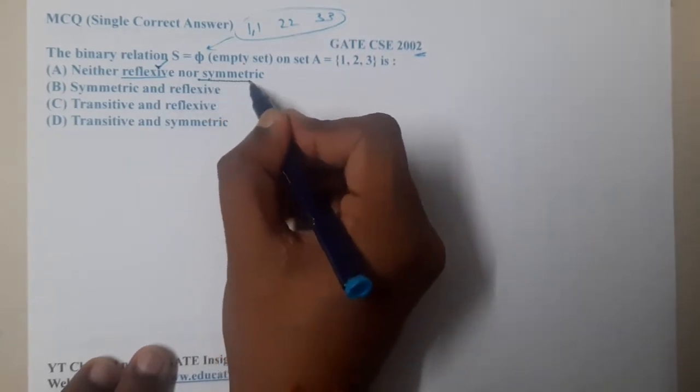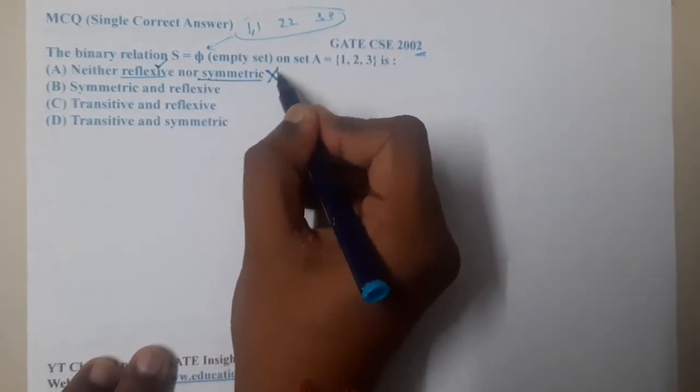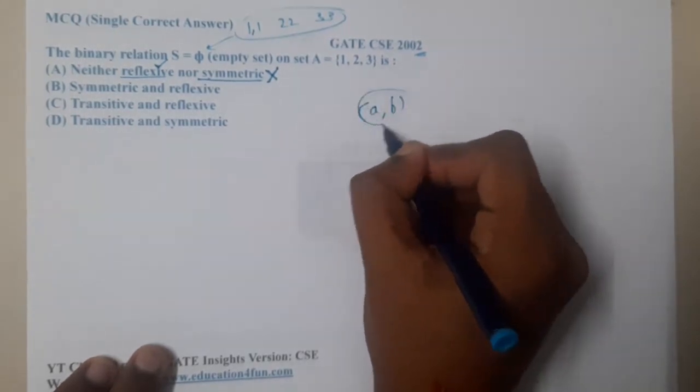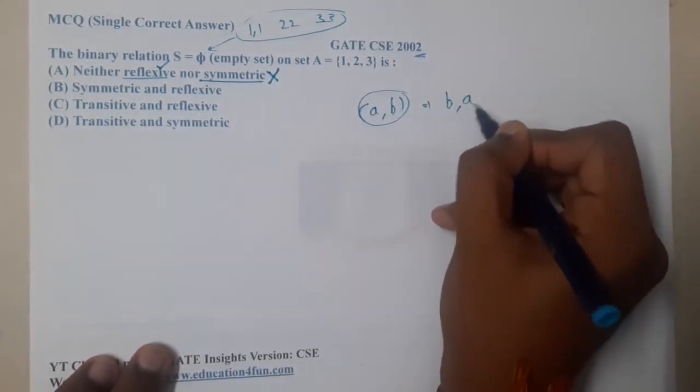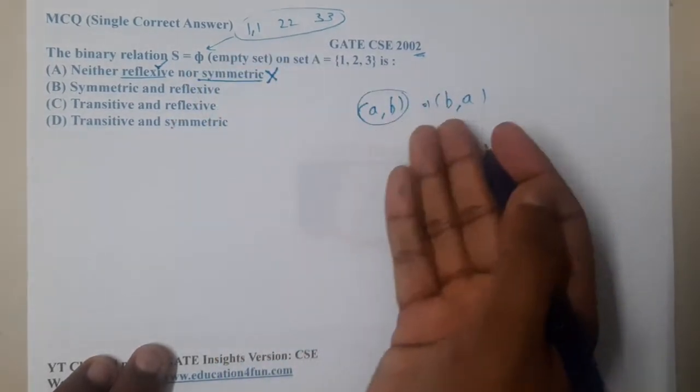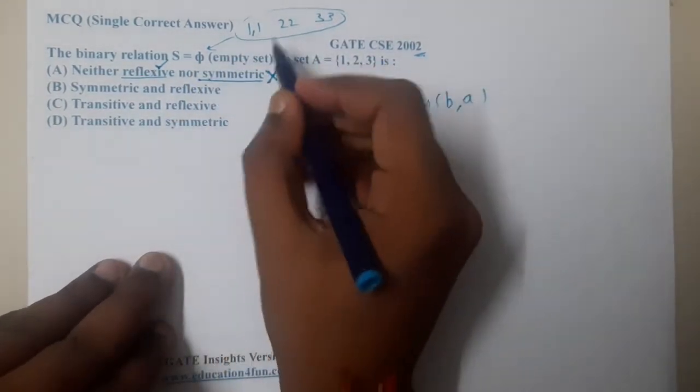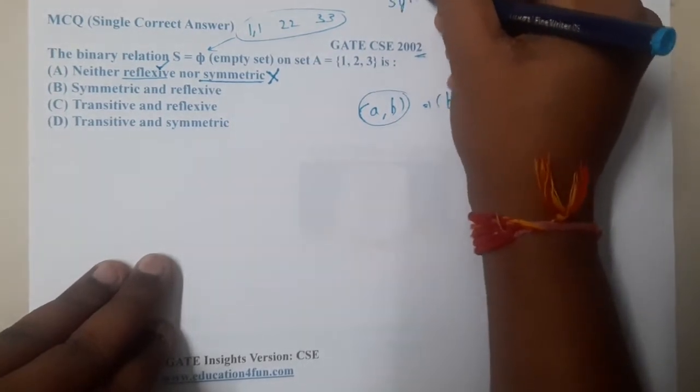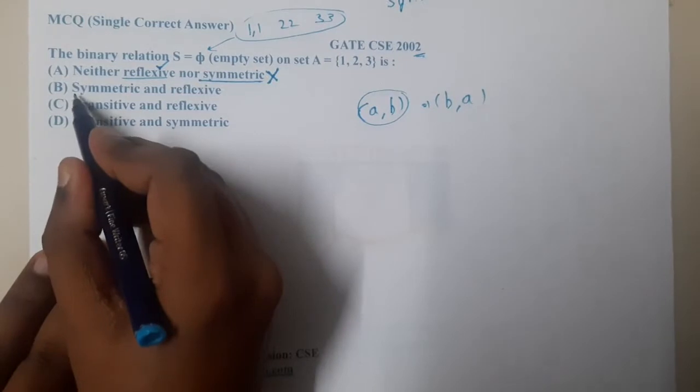But they are saying it is not symmetric also. I disagree with it because if you recall symmetry, if (a,b) exists, only if this exists, (b,a) should exist. Here nothing exists, so where will you check these conditions guys? Hence this given relation is symmetric.